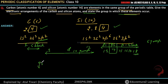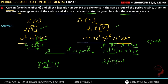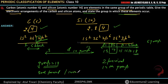Now looking at the positions: Carbon's electronic configuration ends at the 2nd period, so Carbon is in the 2nd Period, Group 14. Silicon's configuration ends at 3p, so Silicon is in the 3rd Period, Group 14. I hope this is clear to you all.